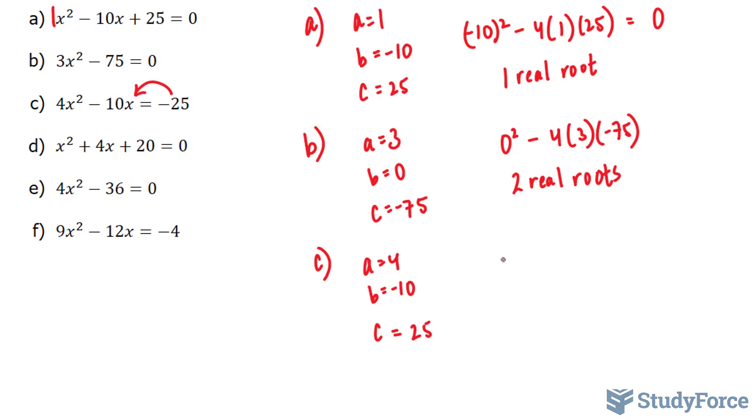Once again, plugging them in to the formula, negative 10 to the power of 2 minus 4 times 4 times 25. I know if I calculate these three numbers, we'll get a negative number more than 100. Negative 10 to the power of 2 is 100, so I know I'm going to have zero real roots in this situation here.